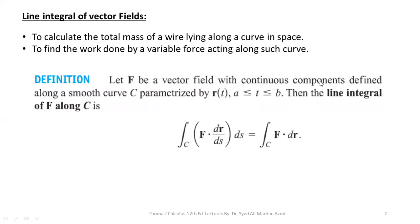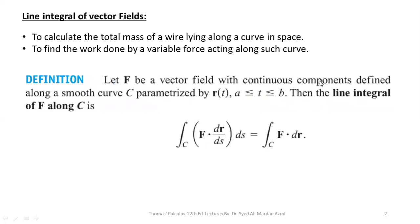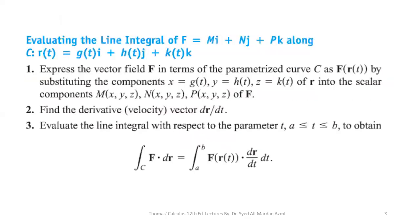This is the basic definition of the line integral. Let F be a vector field with continuous components defined along a smooth curve C, parameterized by R of T for the limits A to B. Then the line integral of F along C is: integral over the curve C of F dot dr over ds into ds, which equals integral over the curve C of F dot dr. Here, dr is the smooth parameterization of the given curve C.